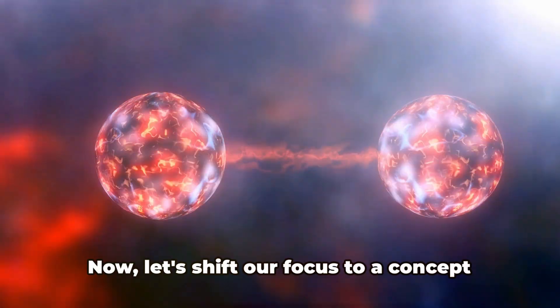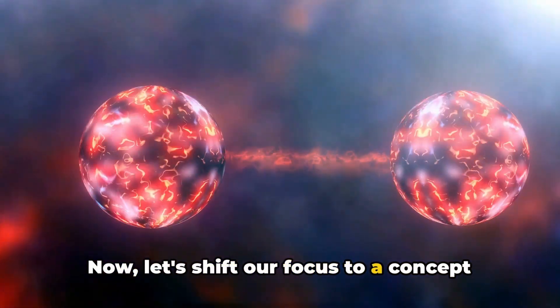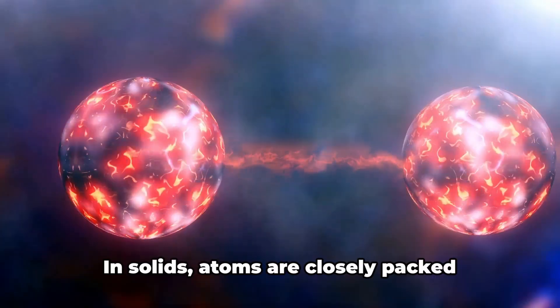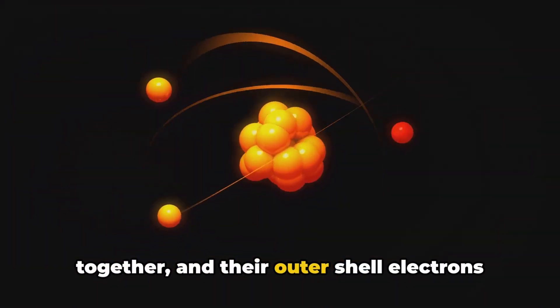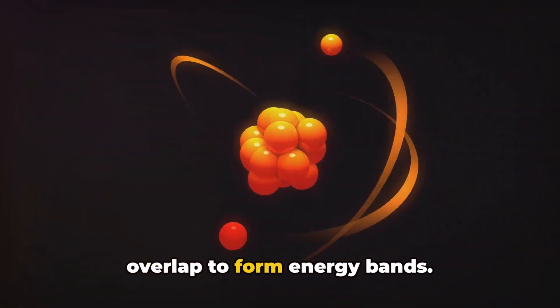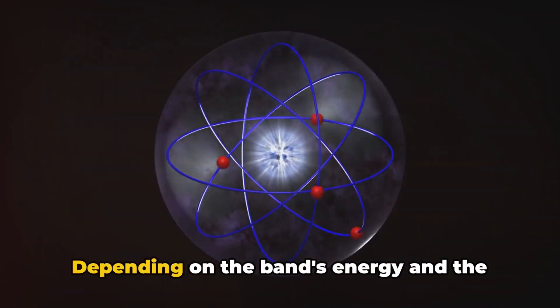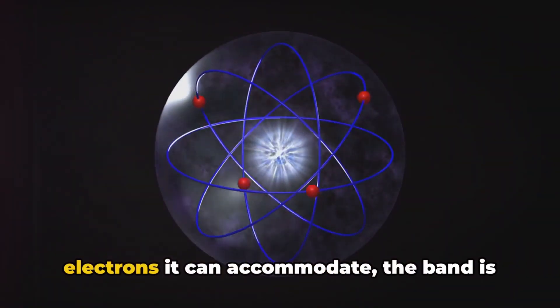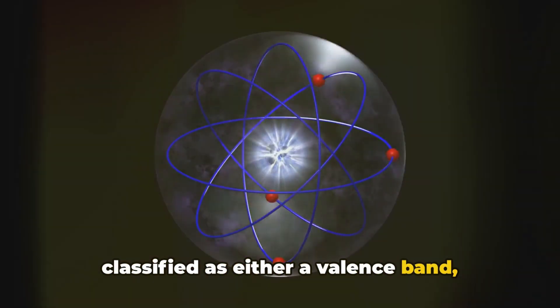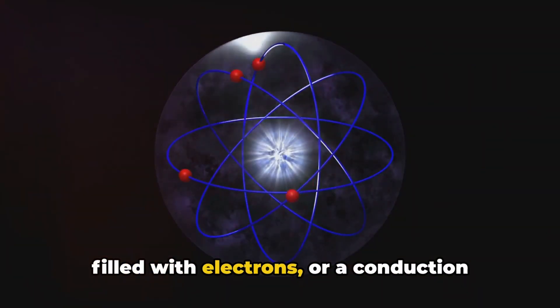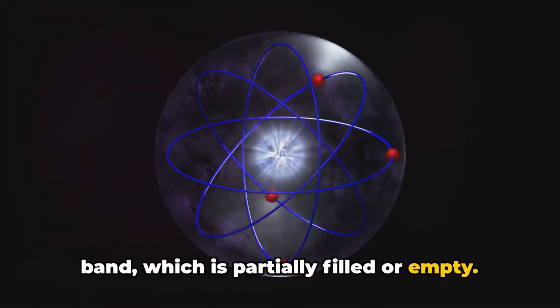Now let's shift our focus to a concept known as band theory. In solids, atoms are closely packed together and their outer shell electrons overlap to form energy bands. Depending on the band's energy and the electrons it can accommodate, the band is classified as either a valence band filled with electrons or a conduction band which is partially filled or empty.